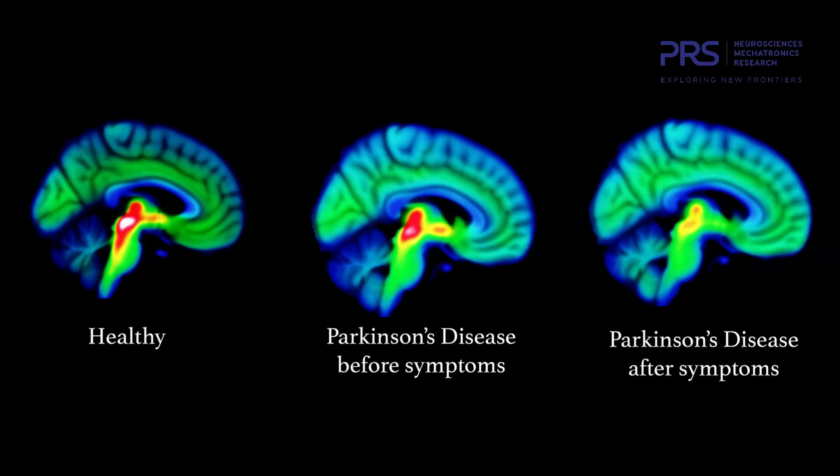Those are the main motor symptoms of Parkinson's disease. Now for the non-motor symptoms: first is anosmia, which is a loss of smell, followed by cognitive impairments, mood disturbances like depression and anxiety, behavioral changes, and sleep disturbances.